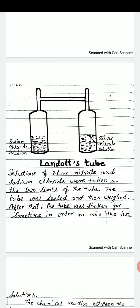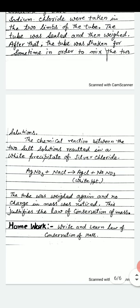The solutions of silver nitrate and sodium chloride were taken in the two limbs of the tube. The tube was sealed and then weighed. After that, the tube was inverted for some time in order to mix the two solutions. The chemical reaction between the two salt solutions resulted in a white precipitate of silver chloride.